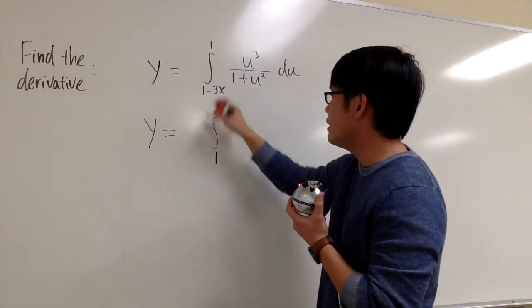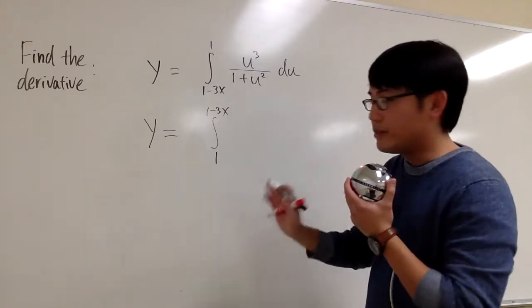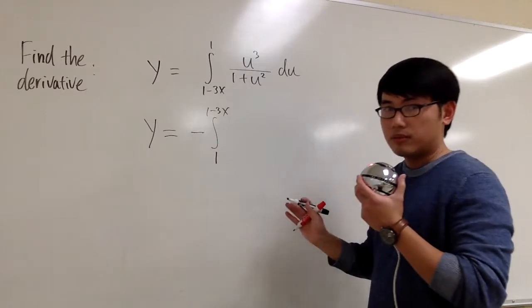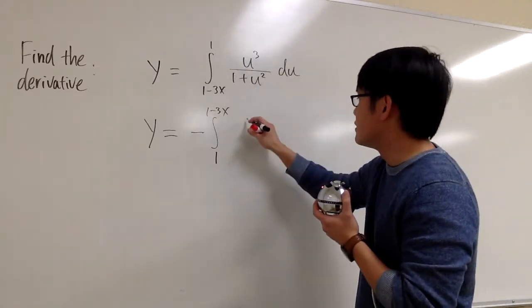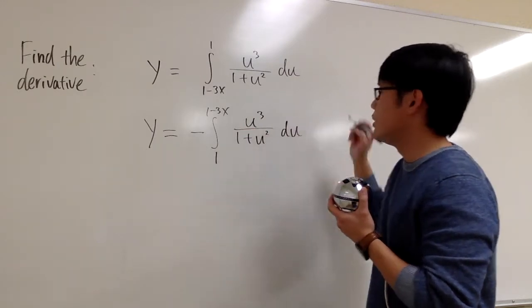I can totally do that. This is 1 to 1 minus 3x. When I switch it, we just have to make sure we include a negative in front of the integral. That's all. And the inside will stay the same: u³ over 1 plus u² du.